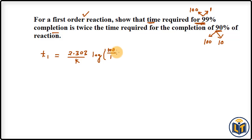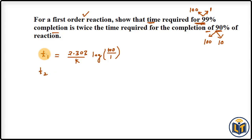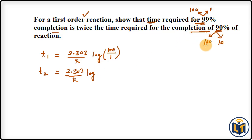For the second reaction completed by 90%, we call the time T2. Using the same formula: T2 = (2.303 / K) × log(100 / 10). We label the times T1 and T2 to avoid confusion, and now we divide both expressions.